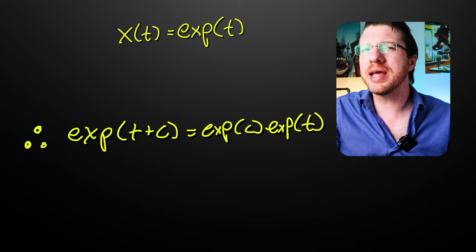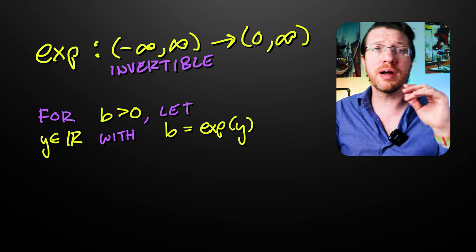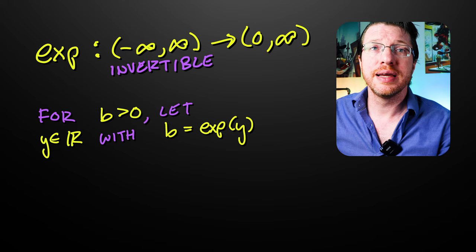But how do we get b raised to the t now? Well, remember, I told you that the exponent of t is strictly increasing positive, and its domain is all the reals. Well, we can also show that its range is R plus. For a fixed b greater than 0, let y be such that the exponent of y is equal to b. Now we set b raised to the t as the exponent of y times t. And yes, that's it.